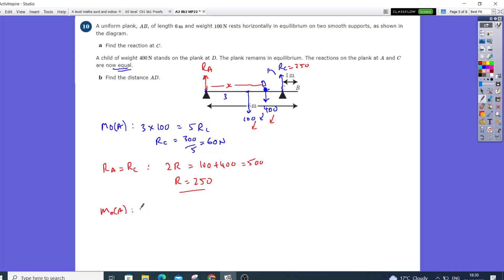then that will be X times D going that way. We've got plus the 300, 3 times 100 is 300,